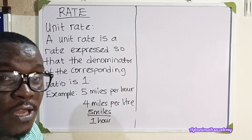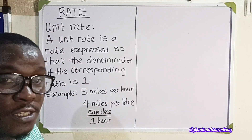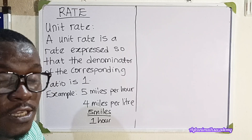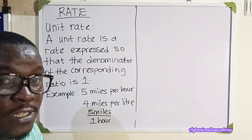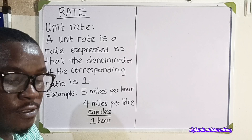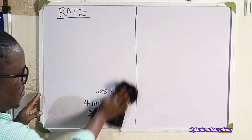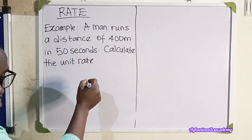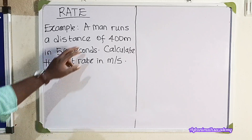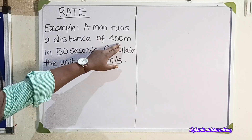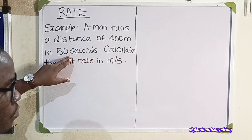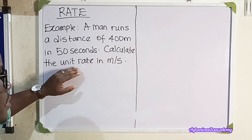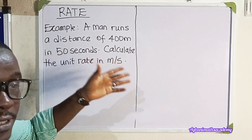We're going to look at examples of how to calculate unit rate. Most times, when you are asked to calculate questions on rates, you are simply asked to calculate unit rate. Let's look at some examples. The question says: a man runs a distance of 400 meters in 50 seconds. We're expected to calculate the unit rate in meters per second.